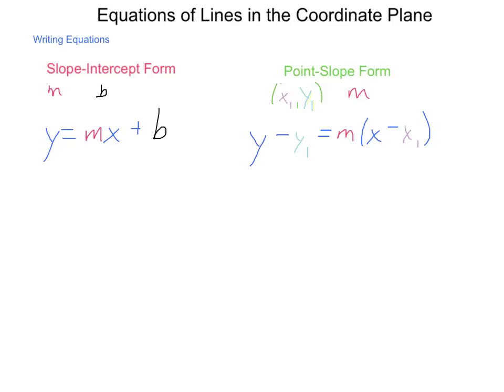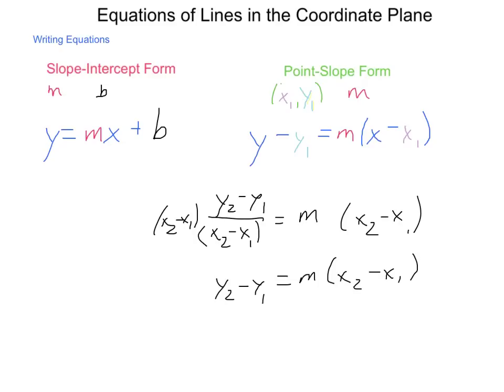The way this equation is derived, when we started with our slope, if we said y2 minus y1 over x2 minus x1 was equal to m, if we were to solve this for the y's, multiply both sides by that denominator of x2 minus x1, we would end up with y2 minus y1 equals m times x2 minus x1. And then if we were to change it from having two specific points into one point and then the general, we would drop these two subscripts and you'd have your point slope form.